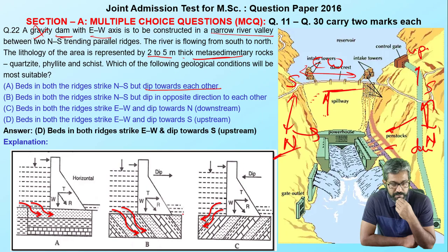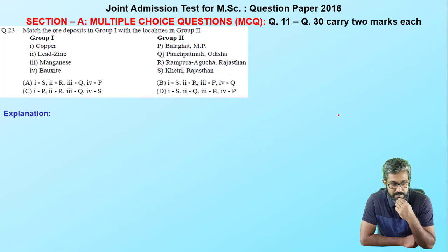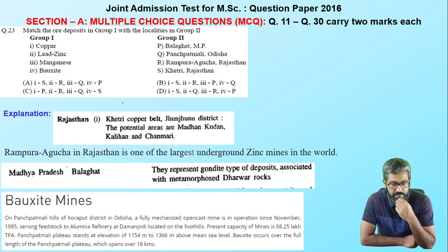The answer is D — it should be the upstream side as compared to the downstream side. Moving to the next question, it is related to economic geology. It is a very simple question: everybody knows where we find copper.